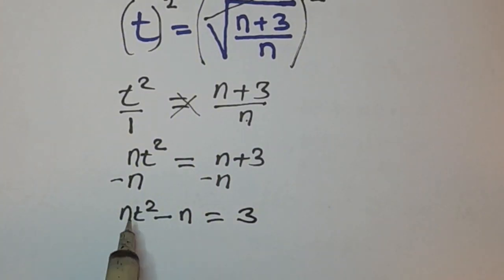At this stage, you can see that n is common, so you are going to factorize. n times—nt² divided by n gives you t², minus n divided by n gives you 1—so n times t² minus 1 is equal to 3.